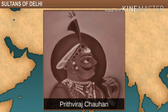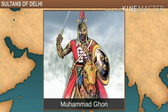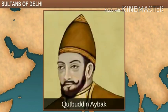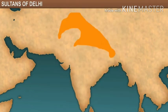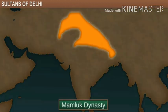In 1192, with the defeat of Prithviraj Chauhan, Delhi again changed hands. And now, for the first time, it came under Muslim rule established by Mohammed Ghori. In 1206, Ghori appointed one of his generals, Qutubuddin Aibak, as the governor of Delhi. Thus was the establishment of the first Muslim dynasty in the Indian subcontinent at Delhi. It was called the Mamluk dynasty.